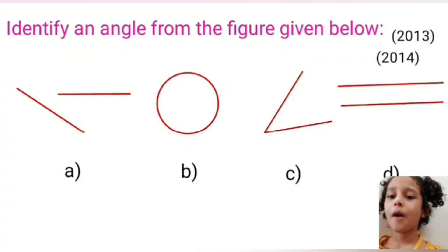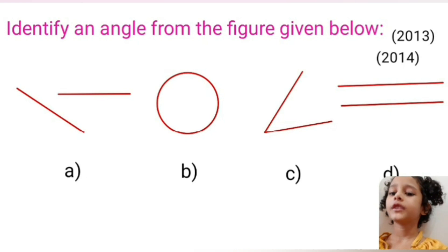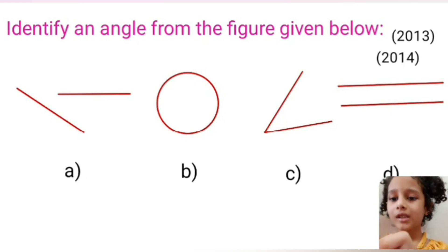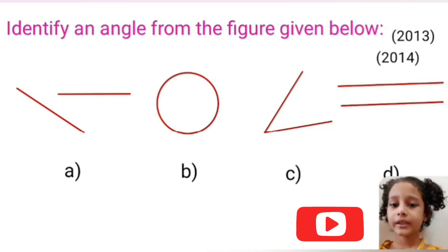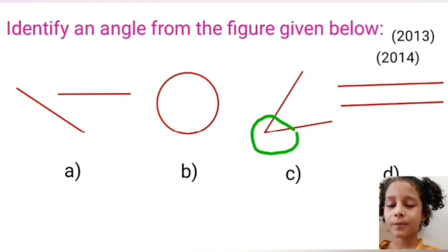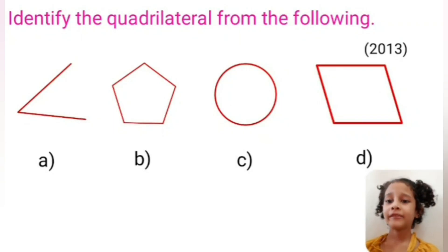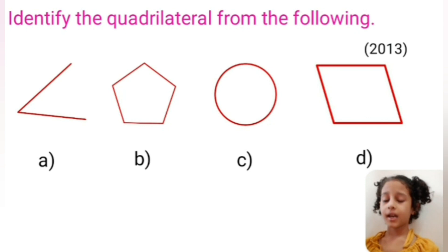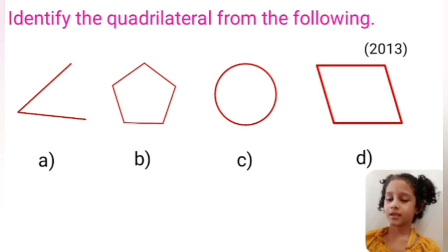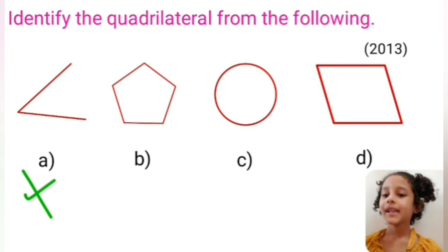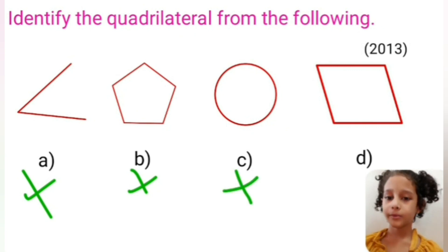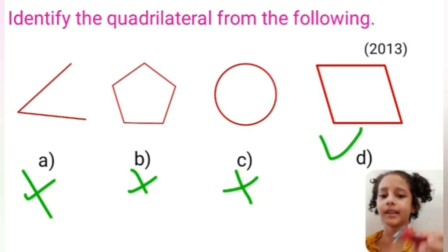Identify an angle from the figure given below. In option A, two lines are not joined. In option B, there are no lines. Option C: two lines are joined, so option C is our correct option. Identify the quadrilateral from the following. Option A is not a shape, option B is a pentagon, option C is a circle, and option D is a quadrilateral. So option D is our correct option.